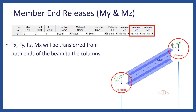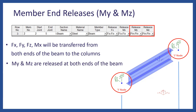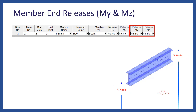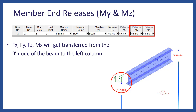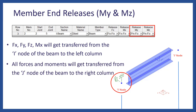So FX, FY, FZ, and MX will get transferred from both ends of the beam to the columns, while MY and MZ are released at both ends of the beam. Another case is MY and MZ set as pin-fix, with the remaining releases FX and MX staying fix-fix. This means the I node is released from transferring moments in MY and MZ to the left column, while FX, FY, FZ, and MX are still transferred from the I node. All forces and moments will get transferred from the J node to the right column.